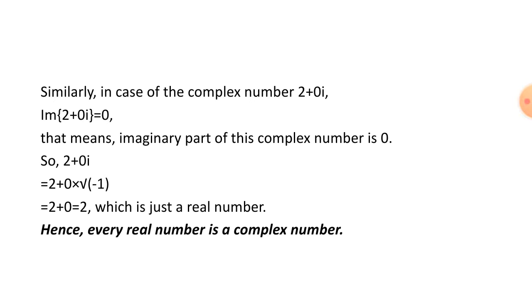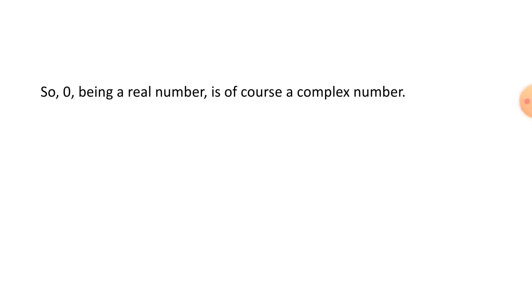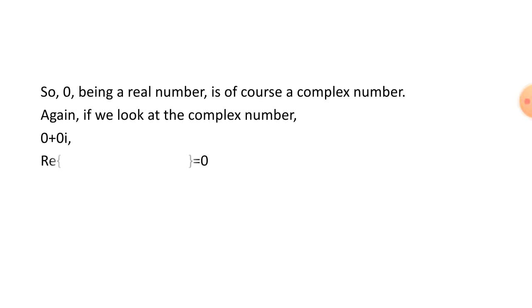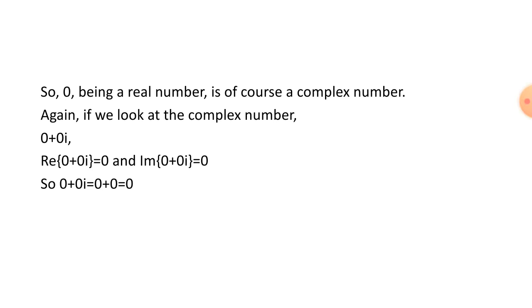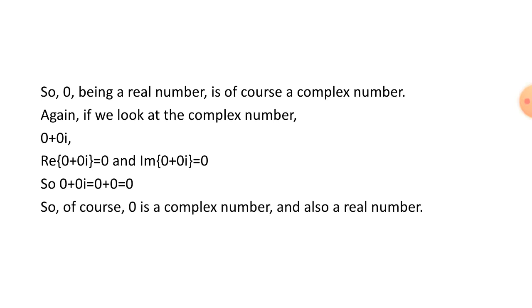If we take both the real and imaginary parts of a complex number as 0, we get the complex number 0 + 0i. The real part is 0 and the imaginary part is also 0, so 0 + 0i = 0. Since 0 is a real number, and every real number is a complex number, we can say that 0 is also a complex number.